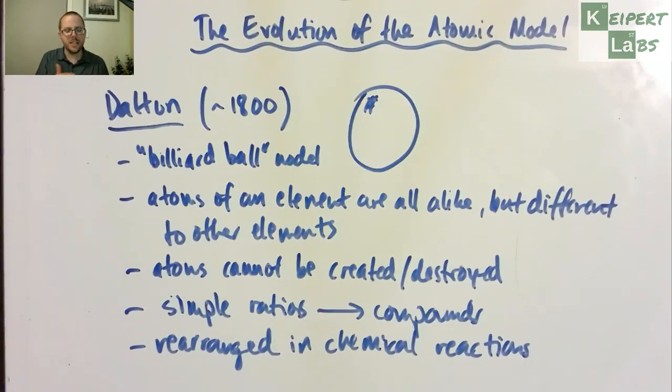So he was proposing that the different elements that they knew existed by this point all consisted of different types of atoms, that the atoms of the same element were all alike but different to the others, and they were alike in all sorts of respects, and that all matter was made of these atoms which couldn't be created or destroyed, that they could be combined in simple ratios to form compounds and then rearranged in chemical reactions. And so this idea persisted for almost 100 years until we then get to Thomson.